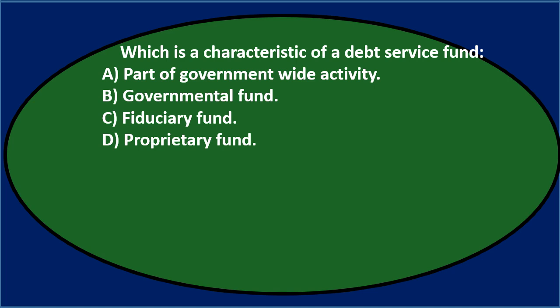Either A, part of government-wide activities; B, governmental fund; C, fiduciary fund; or D, proprietary fund. Let's go through this again using the process of elimination. Which is a characteristic of a debt service fund?